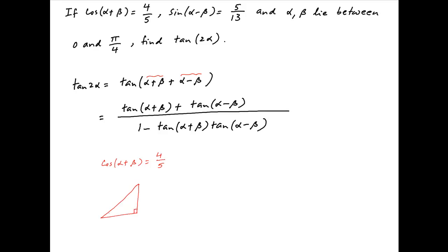We are given that cos(α+β) = 4/5. Consider a right angle triangle where the angle between the base and the hypotenuse is (α+β). Since cos(α+β) = 4/5, the base is 4 and the hypotenuse is 5. Using Pythagoras theorem, the perpendicular is √(25−16) = 3. Therefore, tan(α+β) = 3/4.